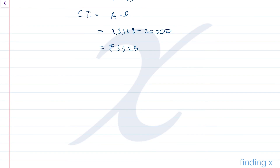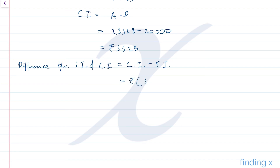The difference between compound interest and simple interest = CI − SI = ₹3,328 − ₹3,200 = ₹128. This is the final answer for question 10. Thank you.